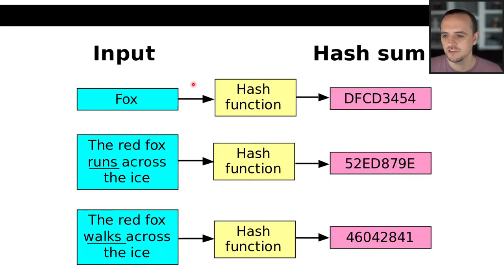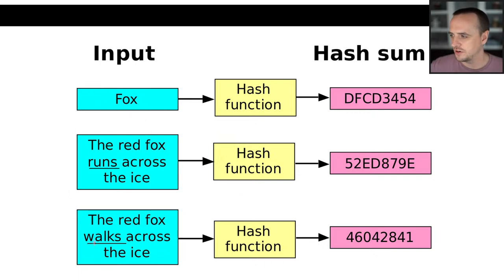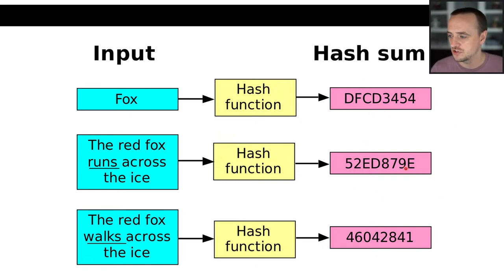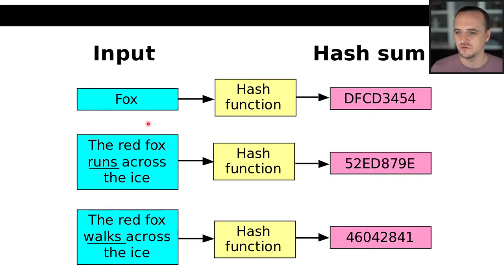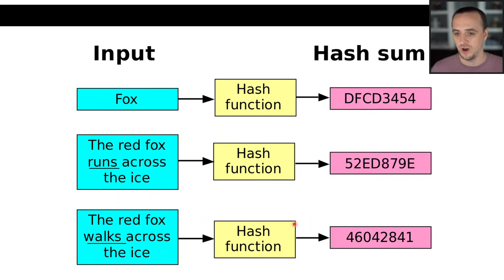Here's an example of a hash function which takes input data — in this case string data, but it could be any data — and turns it into some integer number. This is an example of the CRC32 hash function, which takes data and turns it into a 32-bit integer. These functions take in data and produce some integer. What is inside the hash function? We'll see.